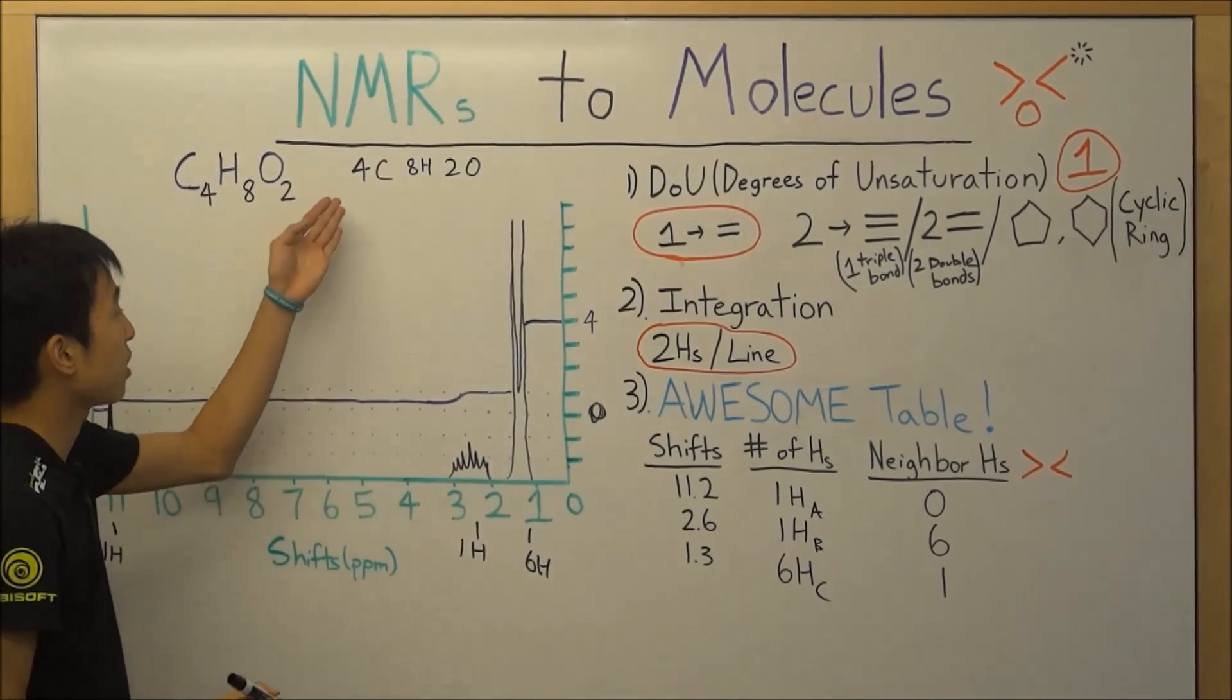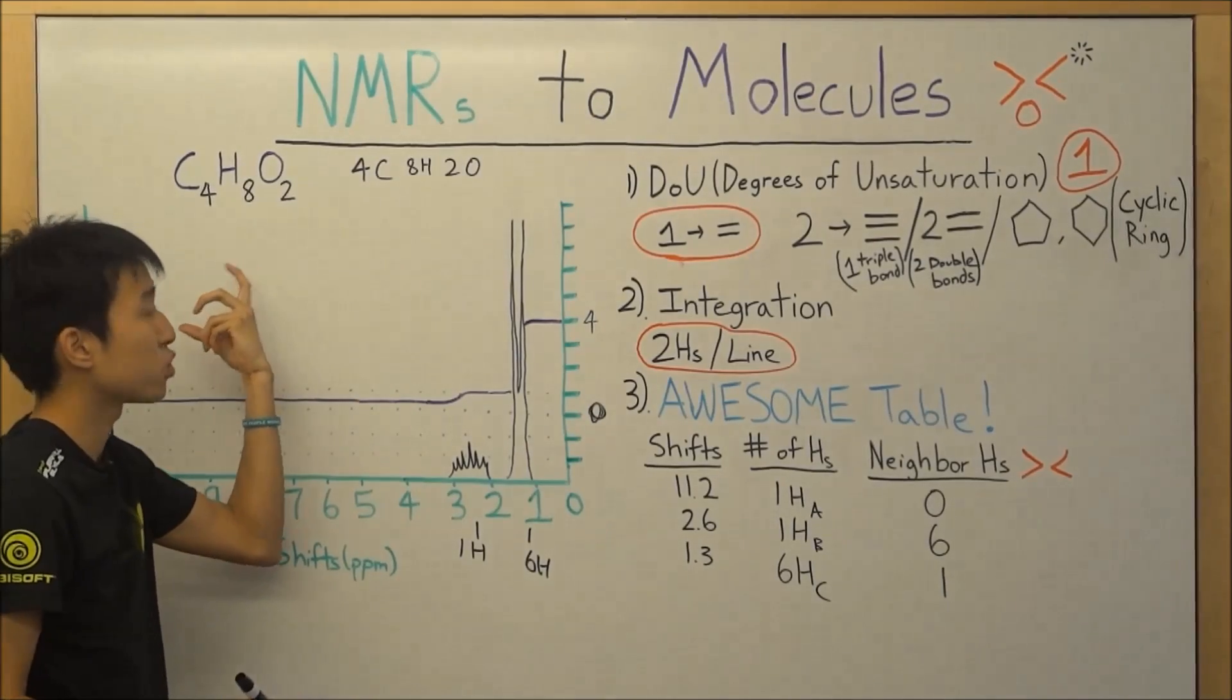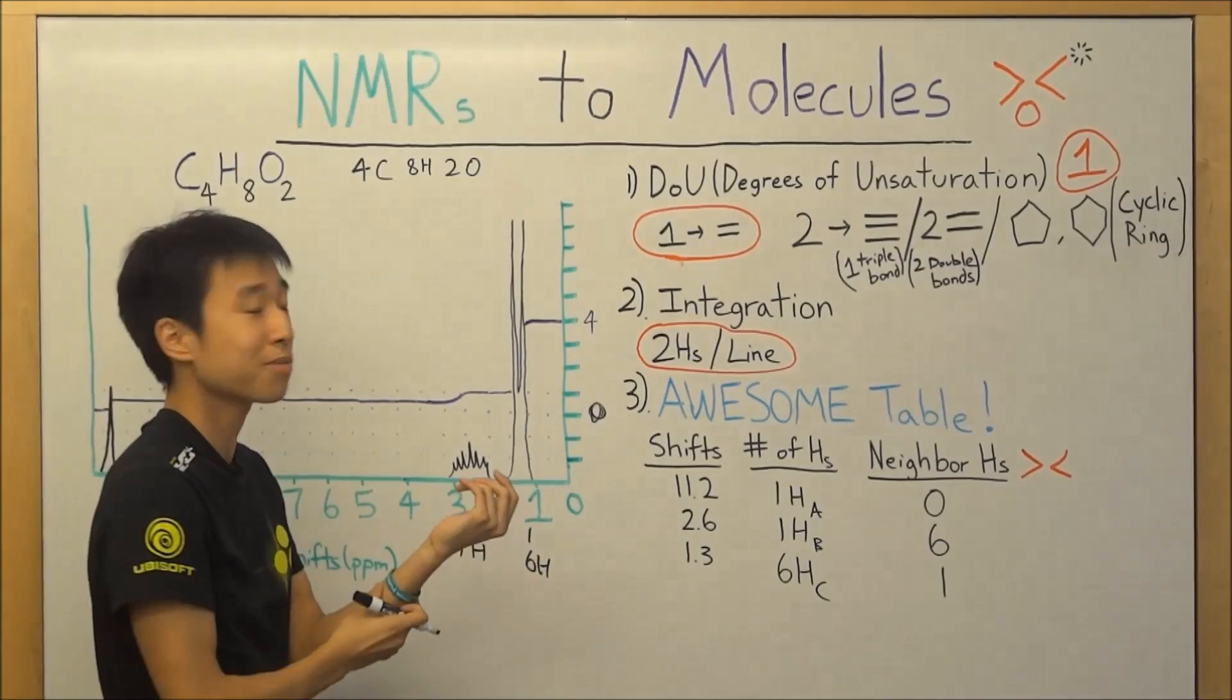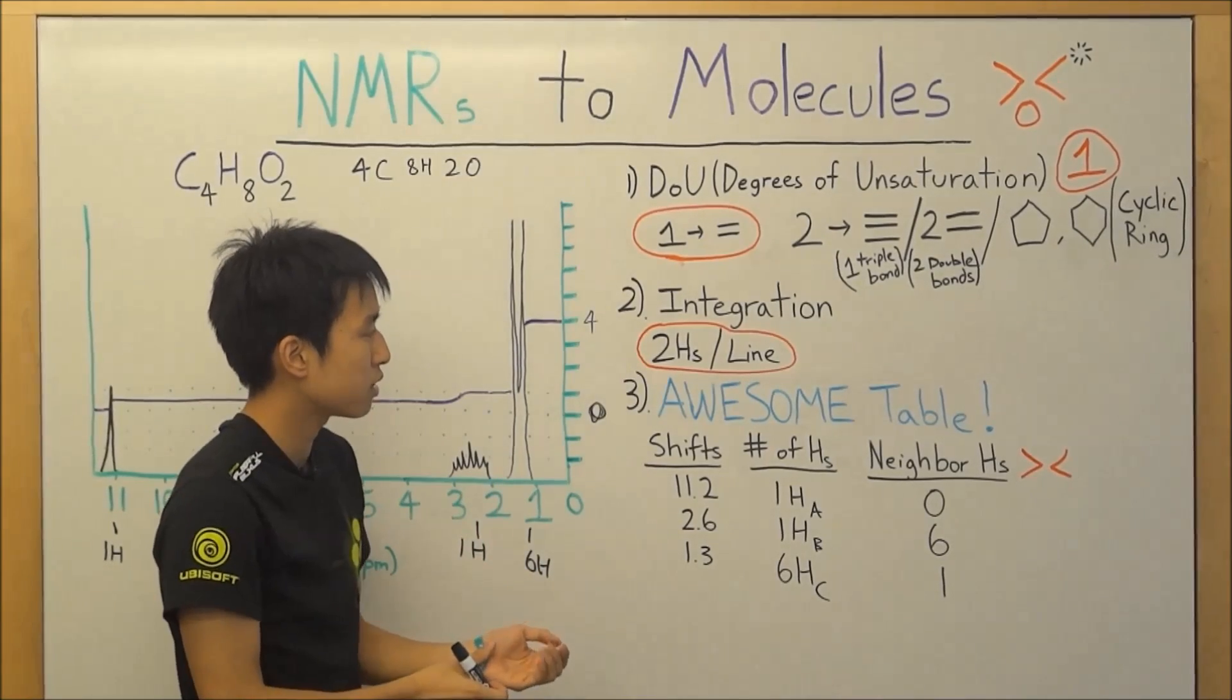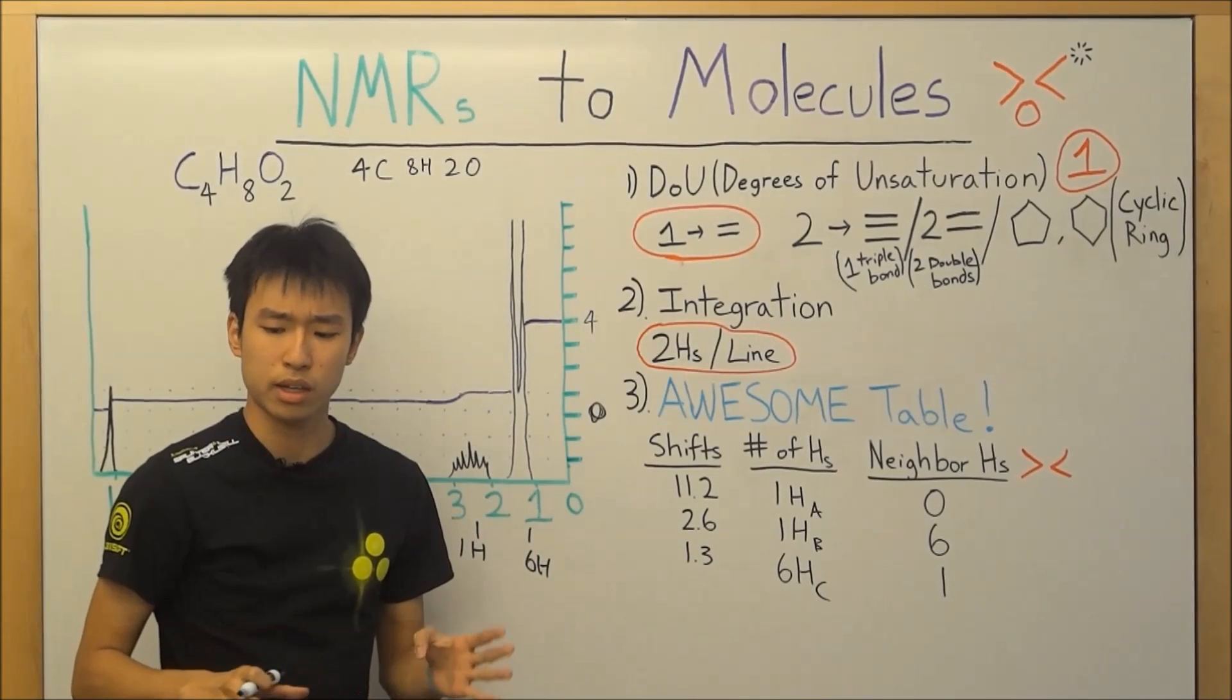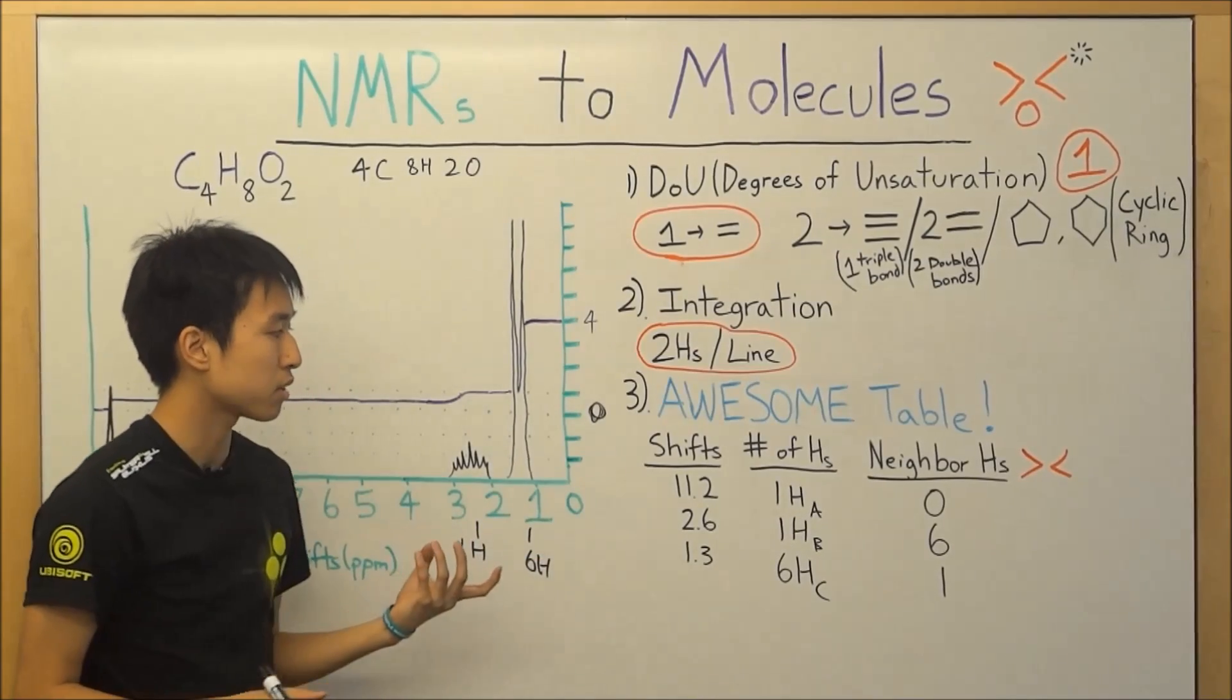And then what I also did is I made a list of the atoms that we need in our structure. So as we draw them out, we can start crossing out where we don't need anymore. So now when you have your table all set up, this is when you need to refer to your shifts table, which tells you what functional group will be at what shift.